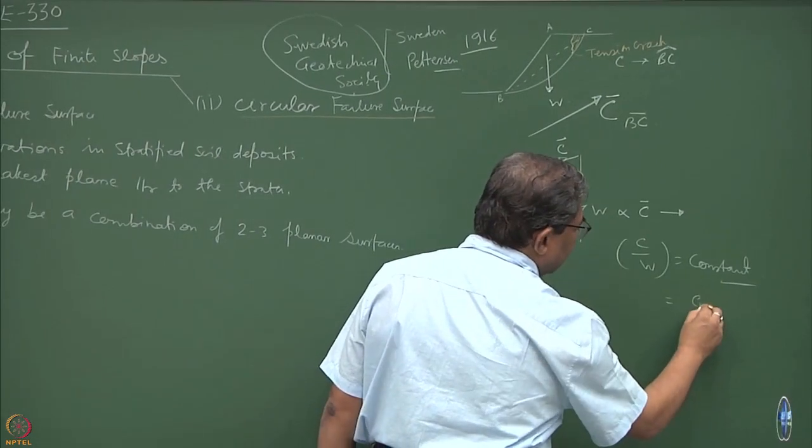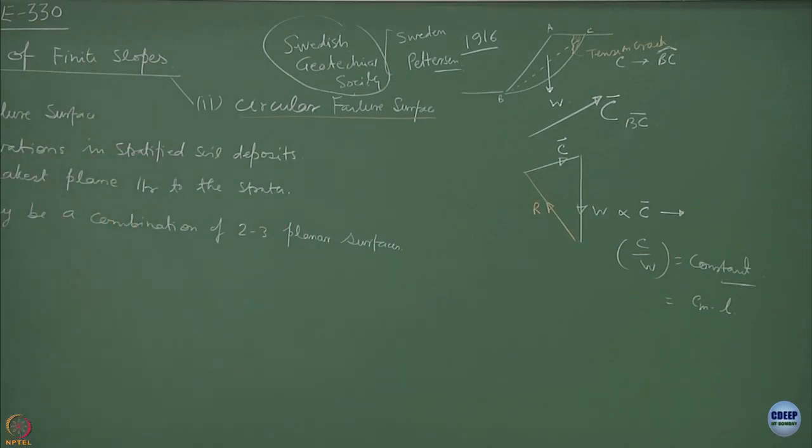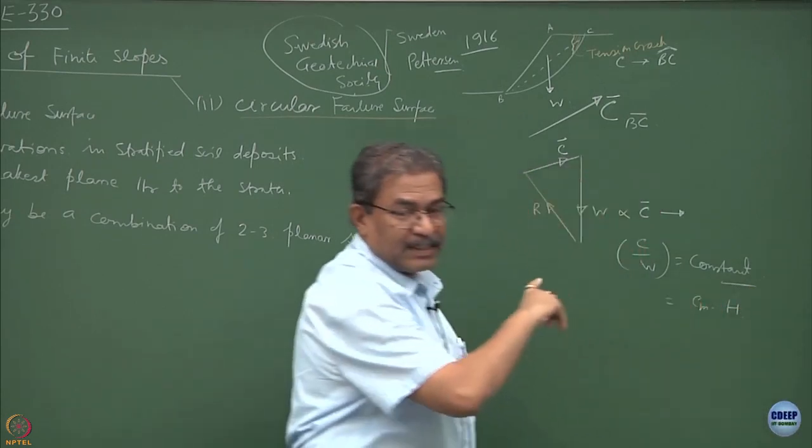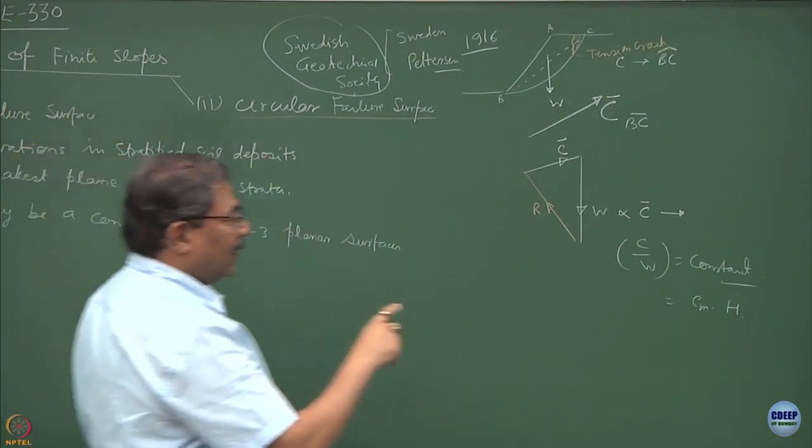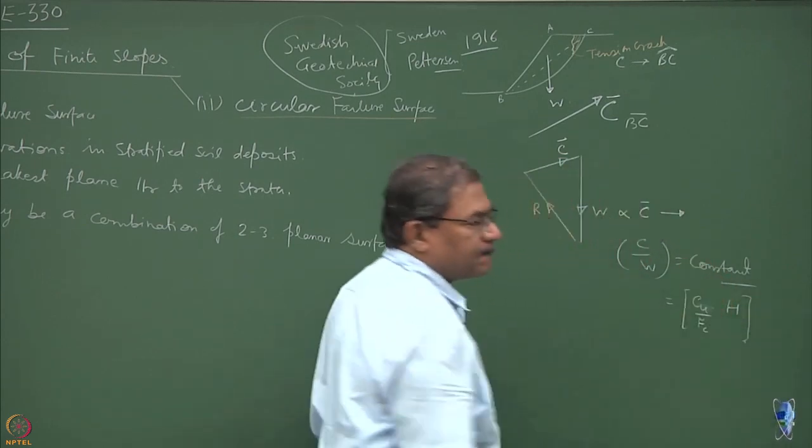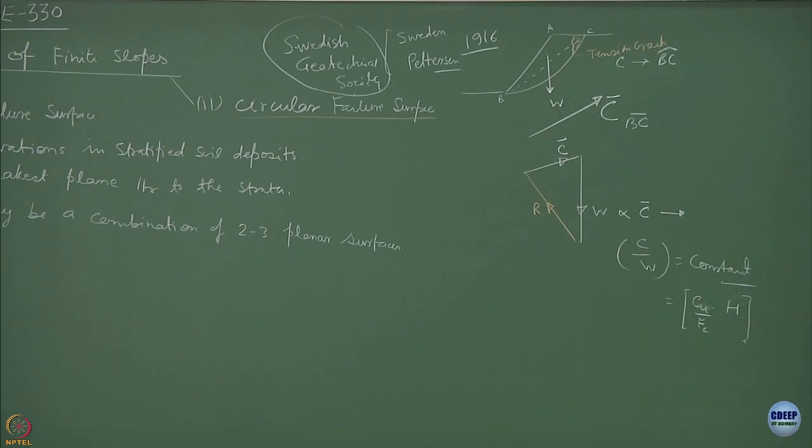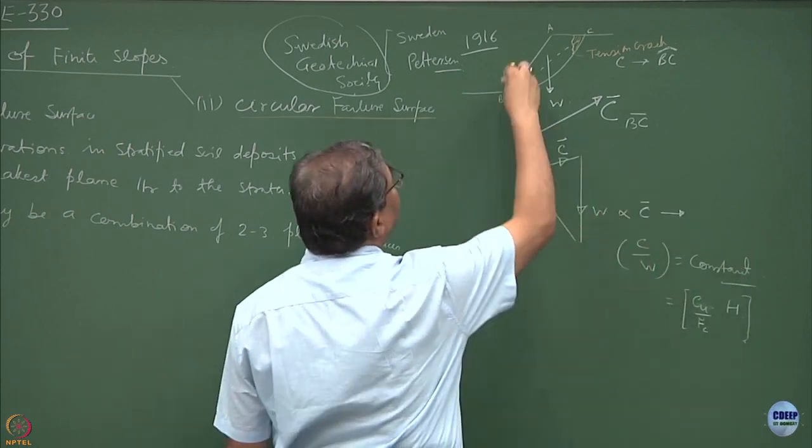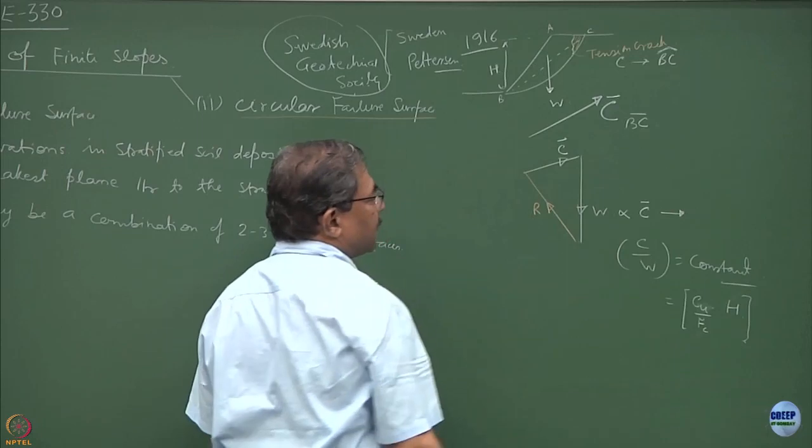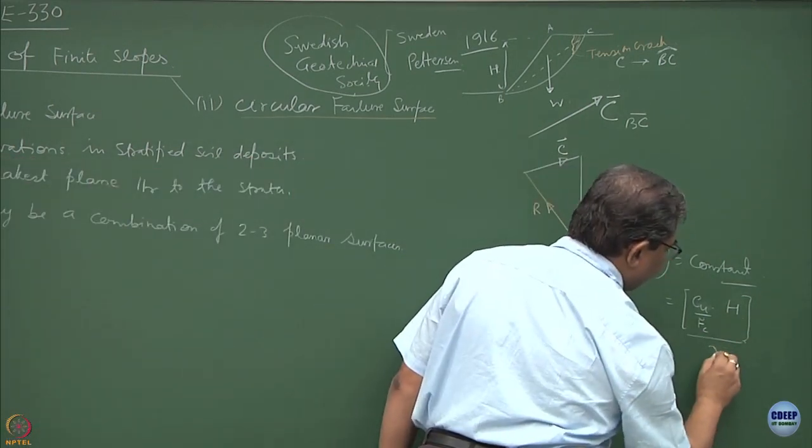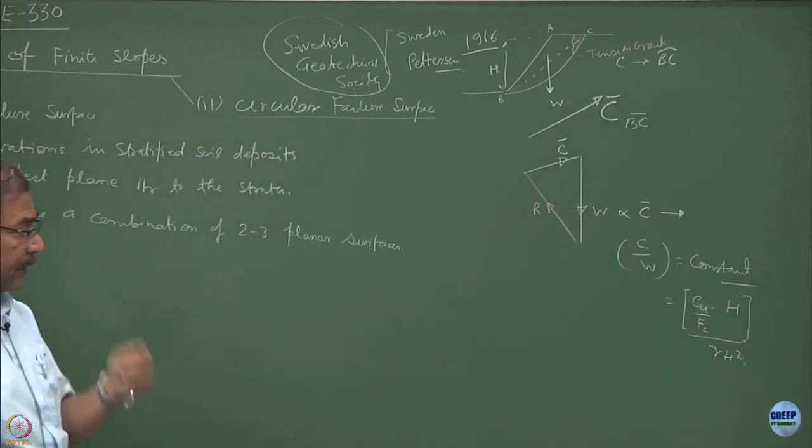Can I write this expression as Cm times length, and what is length? Length itself is a function of H, height of the slope. When you say Cm, what will be the Cm value? Cm will become Cu over factor of safety associated with cohesion, because this becomes Cm.